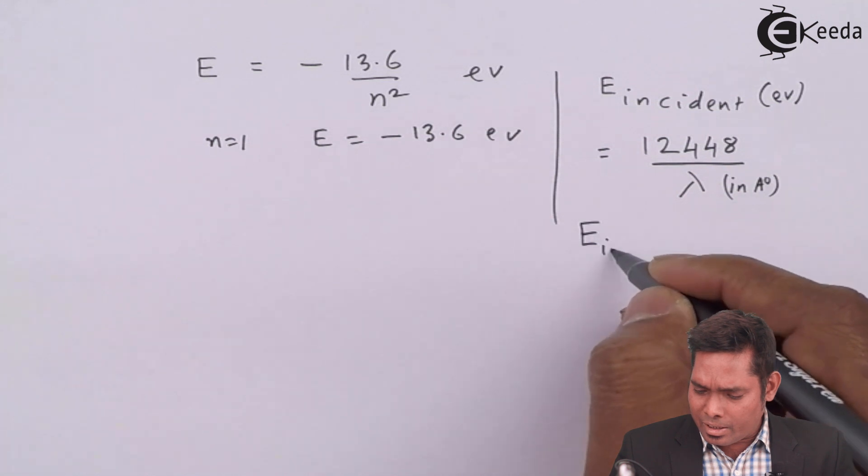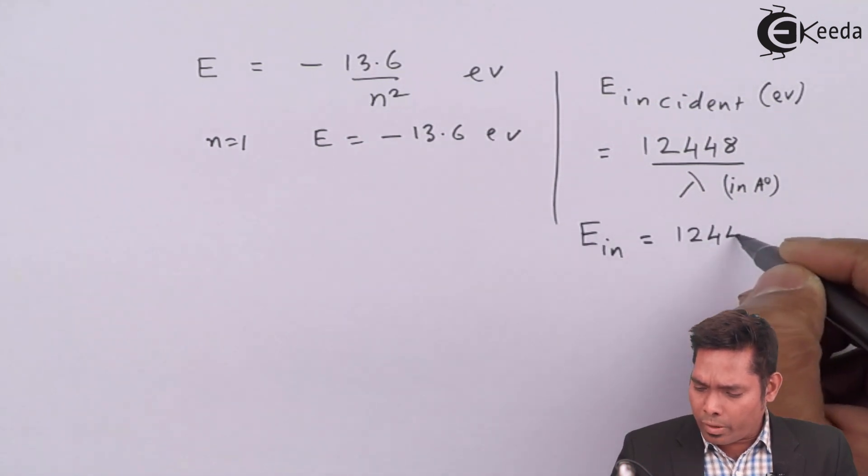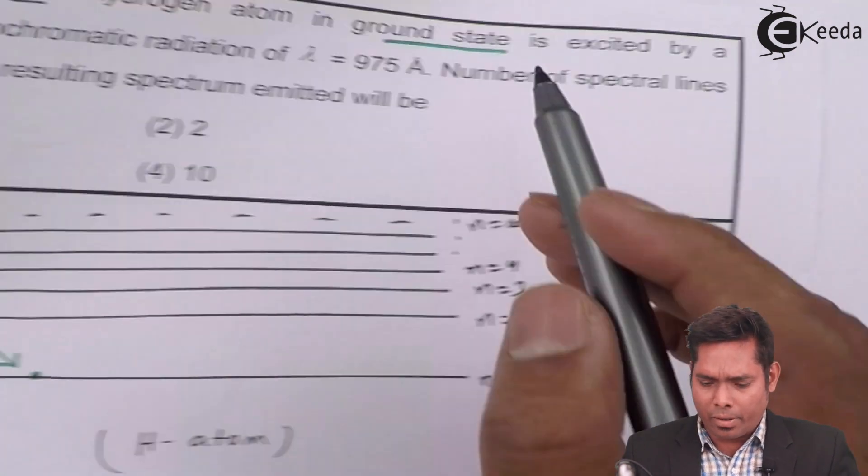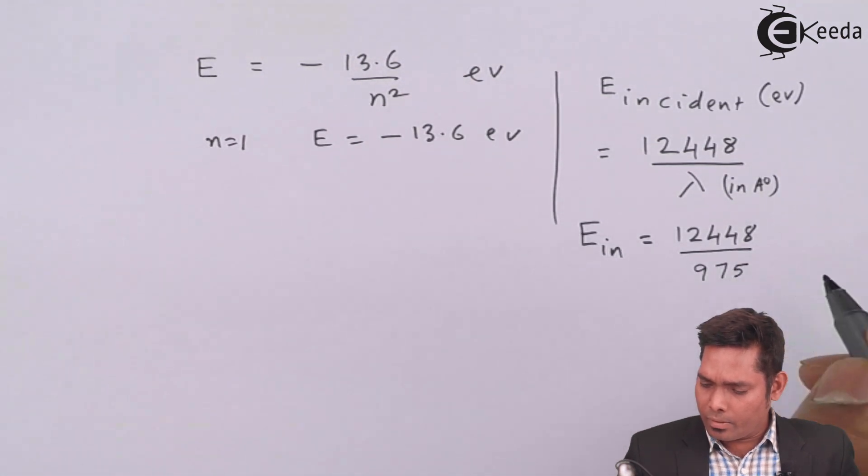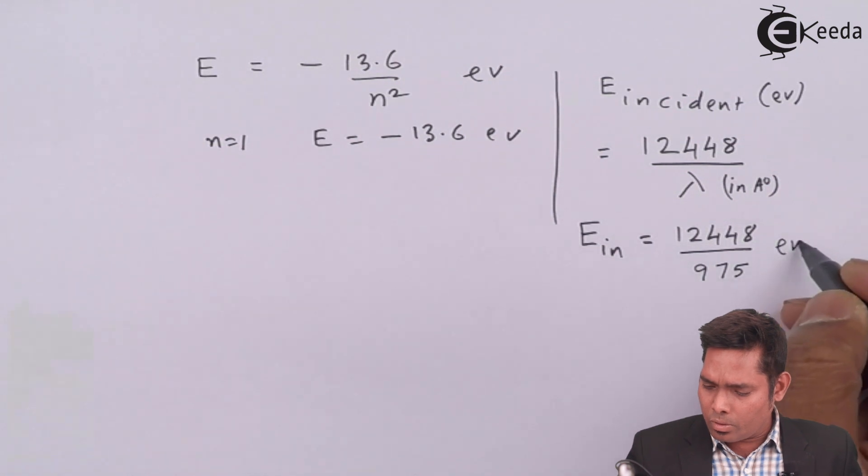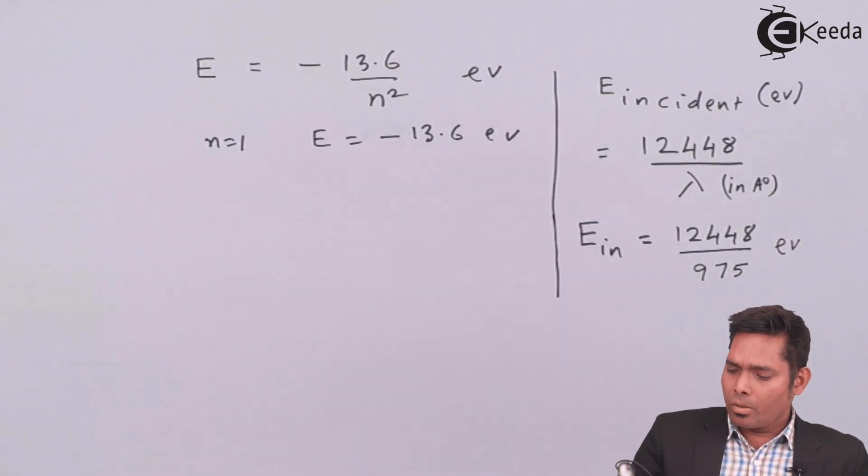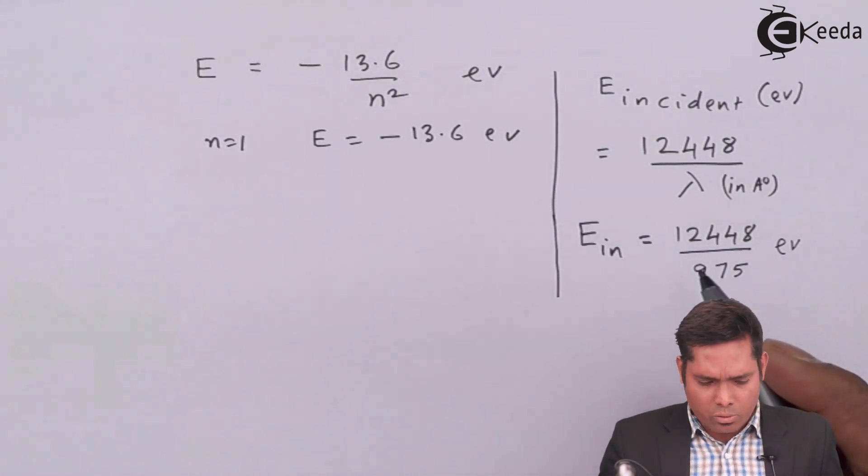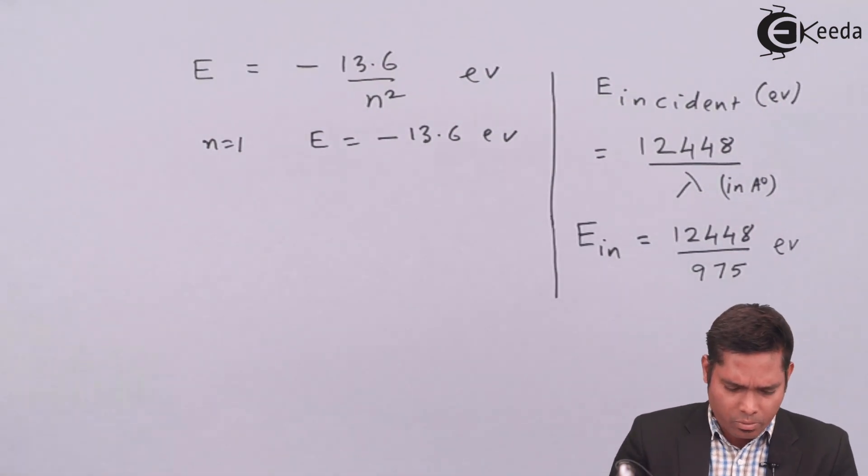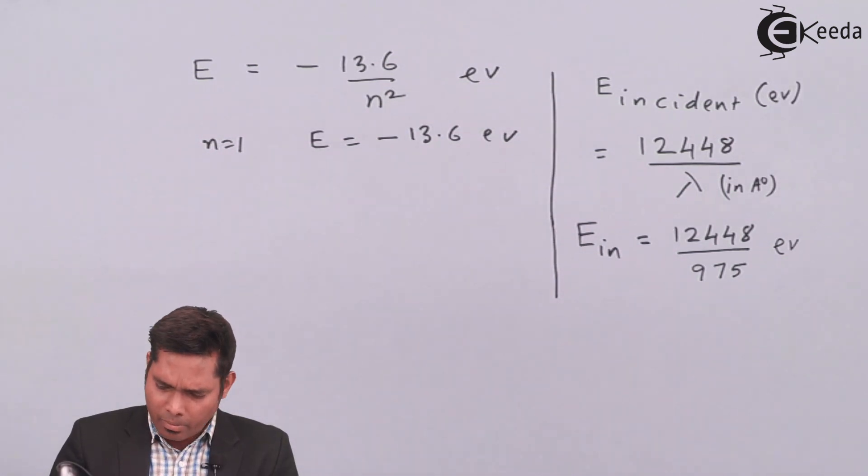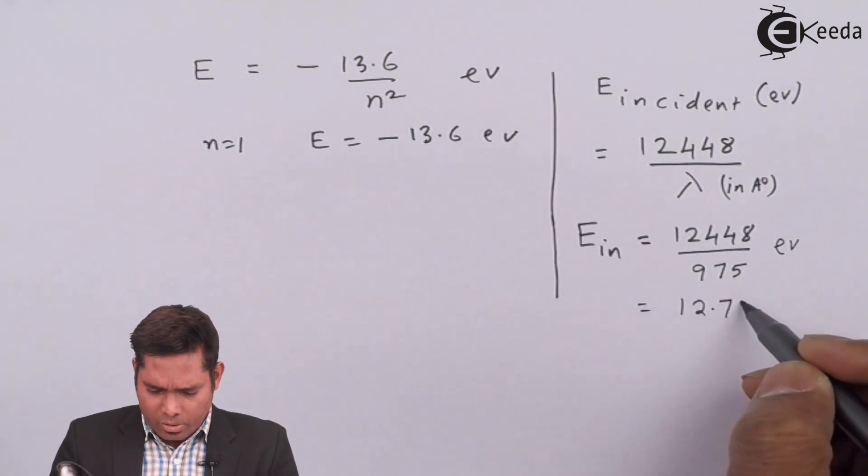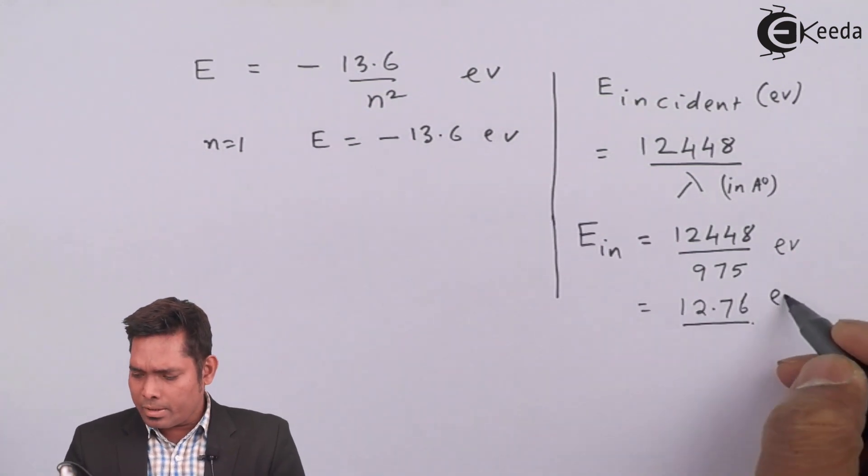So the energy that is incident equals to 12448 divided by the wavelength is 975. This is in Angstrom. So the answer will be in electron volt. We want electron volt because this is there. Now if I solve this, I have to use the calculator to find what is the value. 12448 divided by 975. So answer is 12.76, something like that. We are getting 12.76 electron volt.